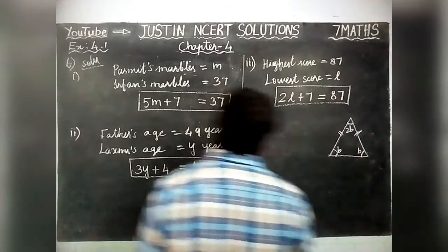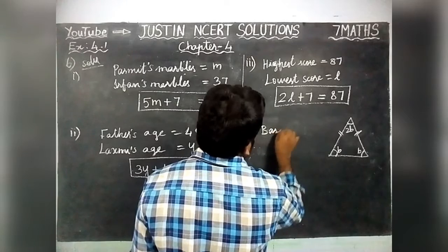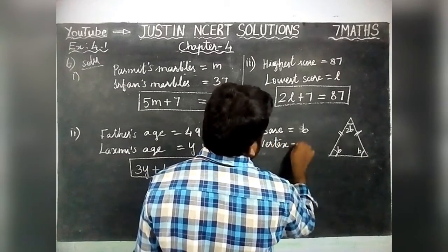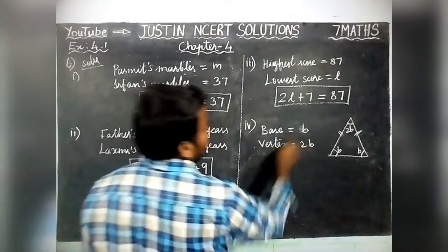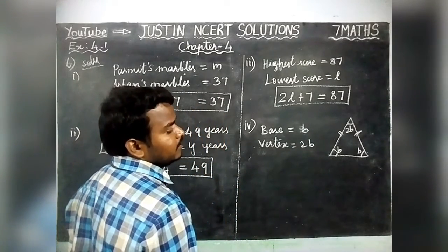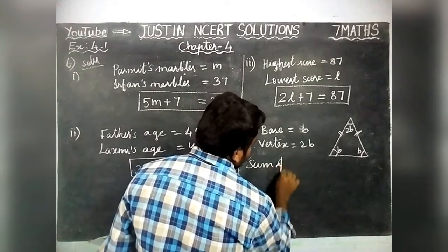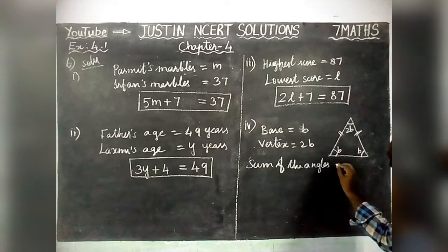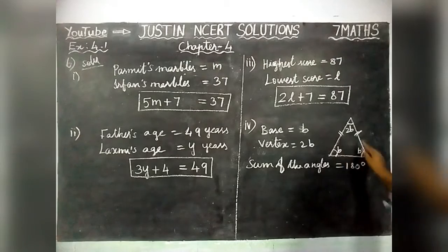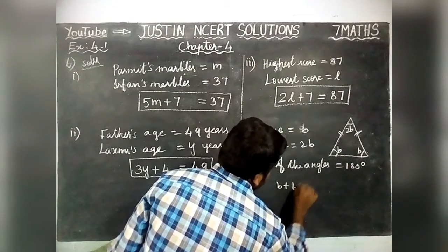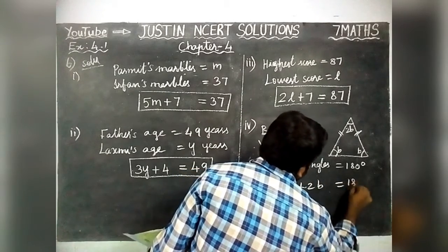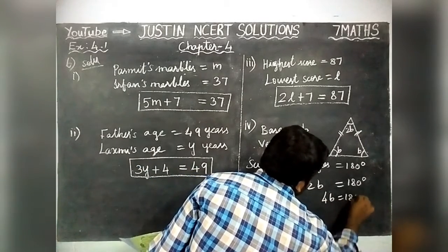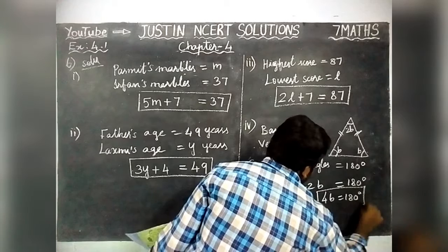We are going to find the sum of the angles. Base is equal to B degrees, vertex angle is equal to 2B. The sum of angles in a triangle is equal to 180 degrees. So, B plus B plus 2B equals 180 degrees. Therefore, 4B = 180 degrees. This is the required equation.